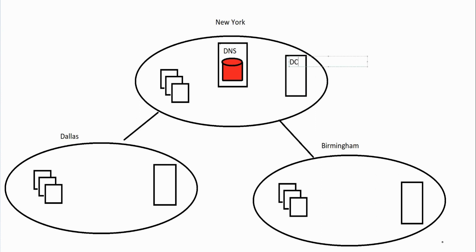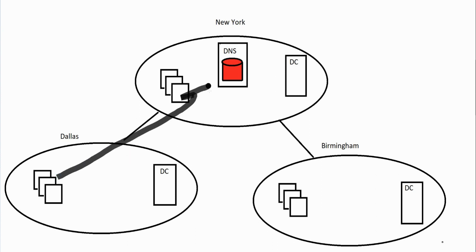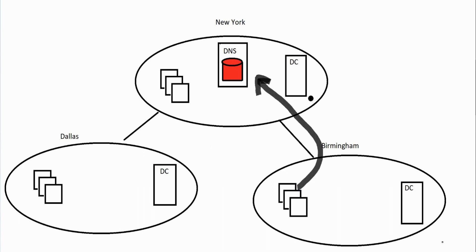There's a problem in this diagram: there's only one DNS server. In order for your computers to log on, they have to locate their domain controllers. No problem for New York since they've got a DNS server right there — they query DNS and then reach the domain controller. But in Dallas, connections have to travel all the way up to New York just to learn the IP address of the domain controller in Dallas. Same issue for Birmingham.